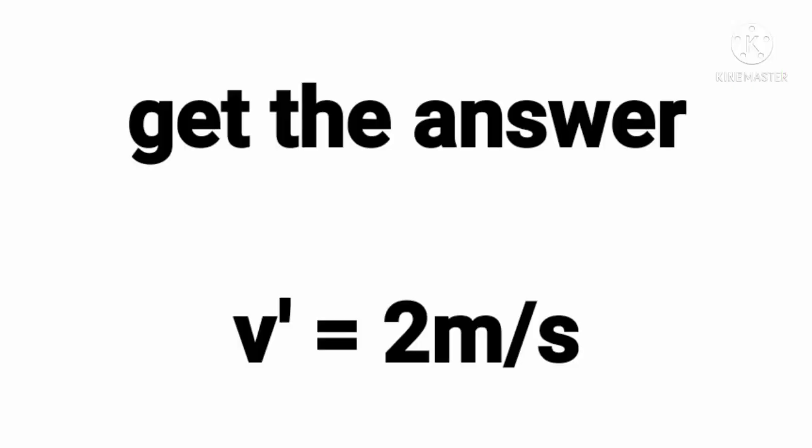And now, for your answer: V prime is equal to 2 m/s. This is also the velocity of the combined gliders.